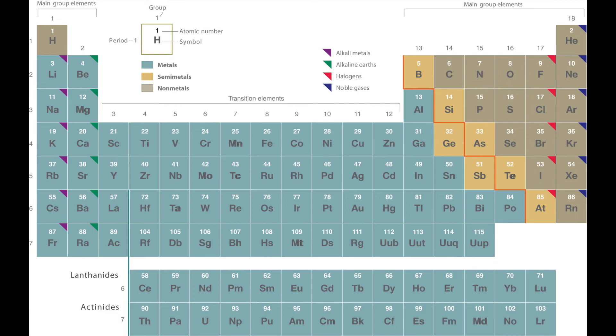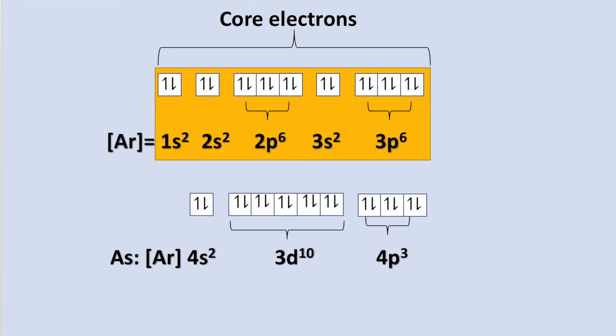Let's do another one, such as arsenic, which is denoted as As. Which noble gas will we use to denote the core electrons? What you have to do is look at the previous period, so n is equal to 3, and find the noble gas that corresponds to it. In this case, that would be argon. Argon will be in brackets, and we will continue using the diagram to fill in the rest of the electron configuration. We know we are on the fourth period, so we will begin by starting with energy level 4. The configuration will be [Ar] 4s2, 3d10, 4p3.